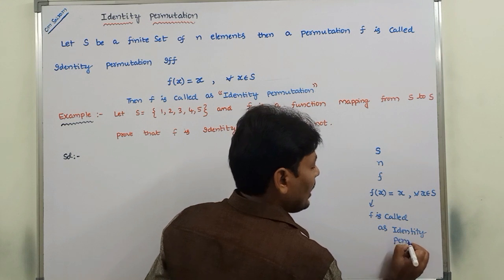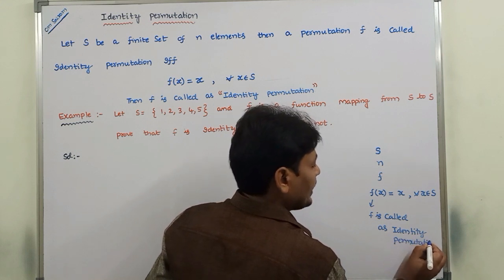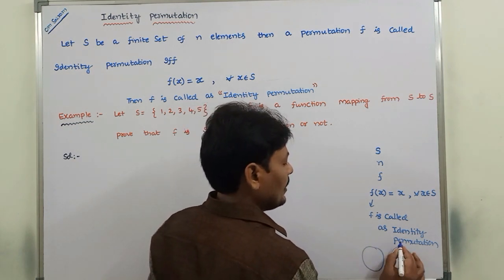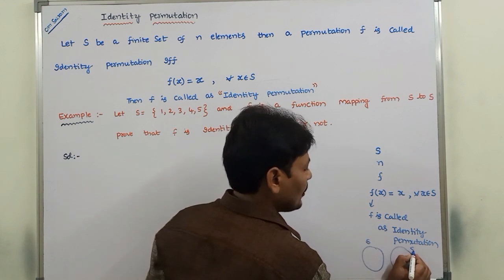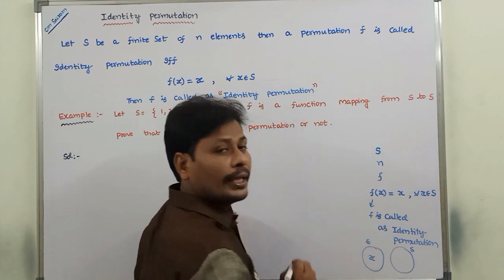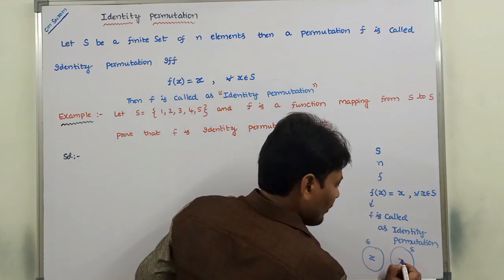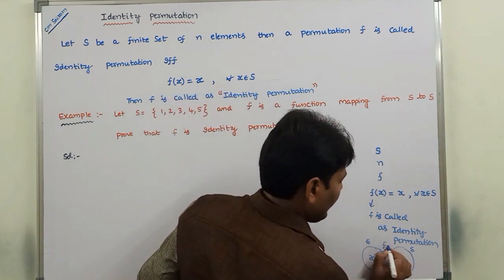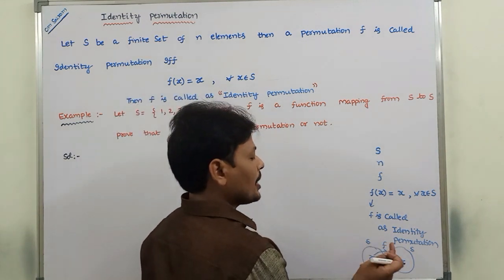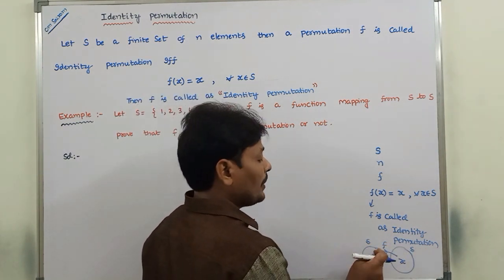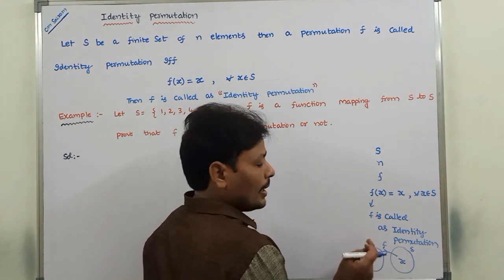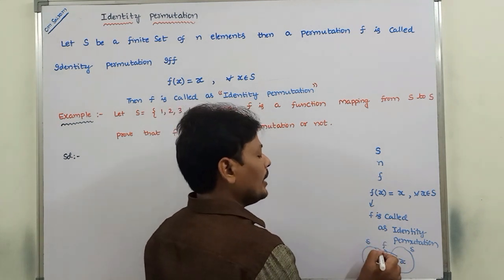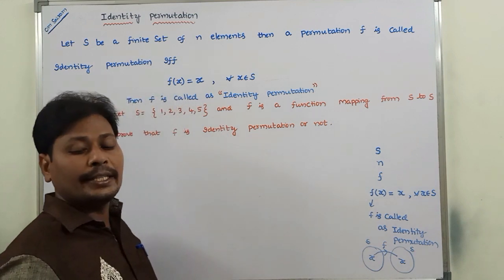Diagrammatically, I am representing this. This is S and this is also S. I am taking one element x. X is mapped to the same element x through the function f. So f is a function mapping from S to S. Taking any element x in S, the image of x is only x. Then f is called an identity permutation.